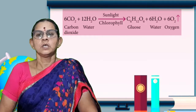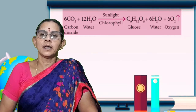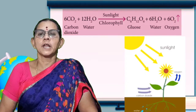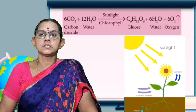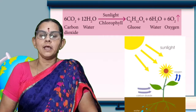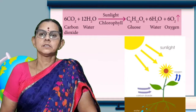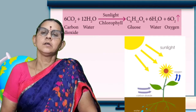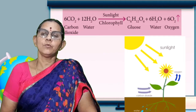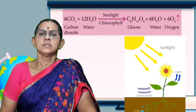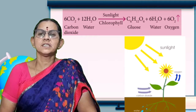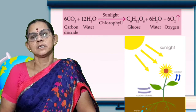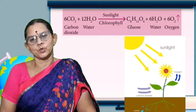So, what are all required for photosynthesis? Mainly sunlight, chlorophyll, carbon dioxide, and water. So carbon dioxide is reduced to carbohydrate starch. That is what photosynthesis is.